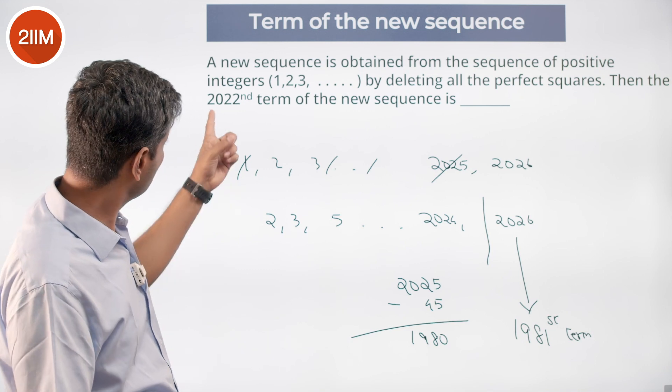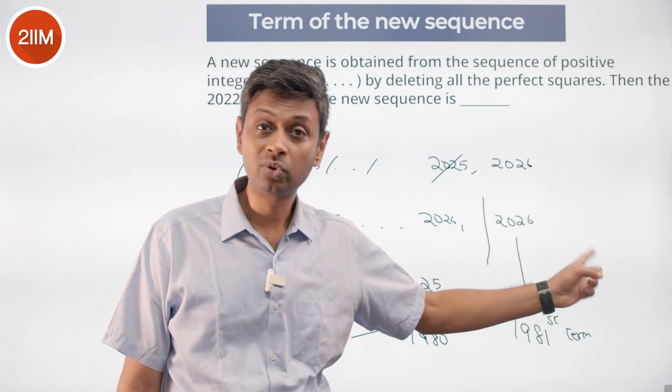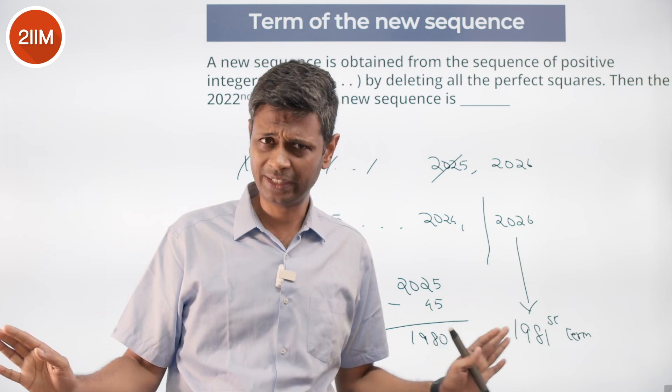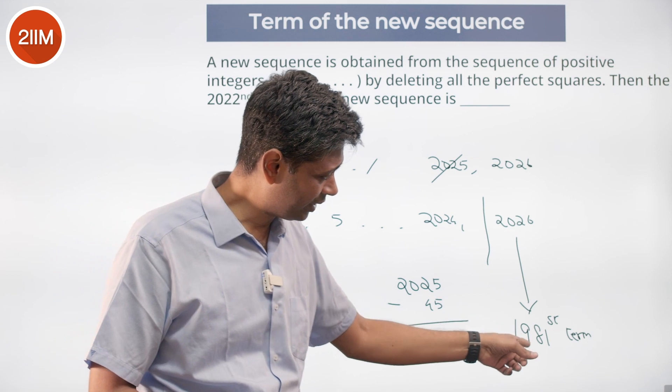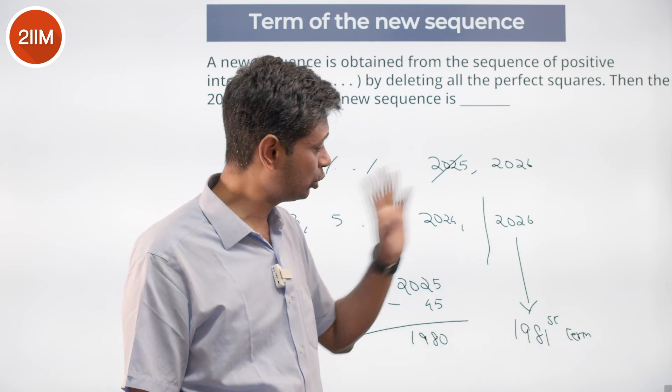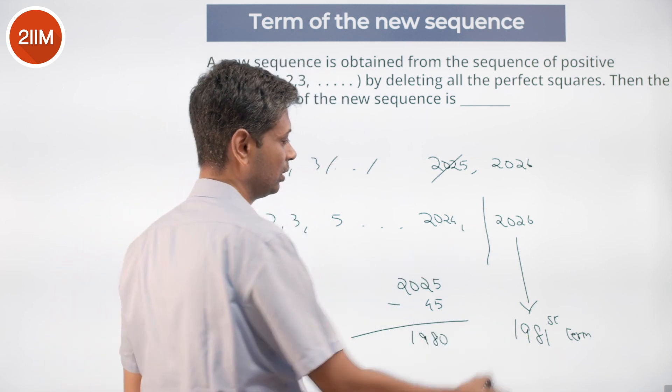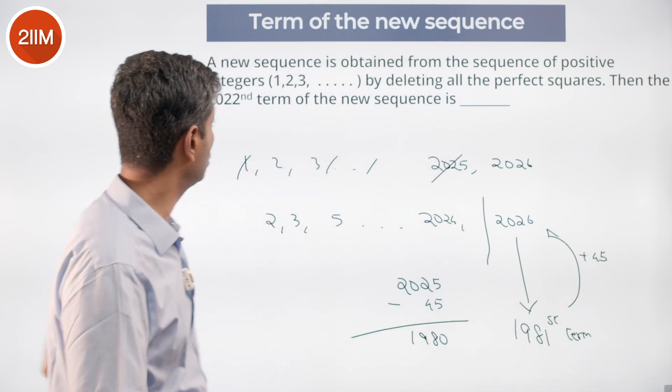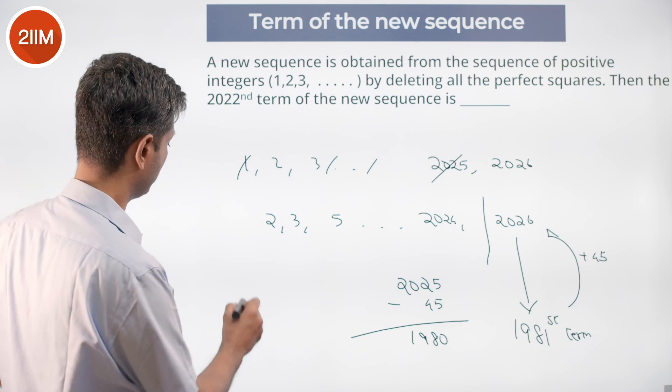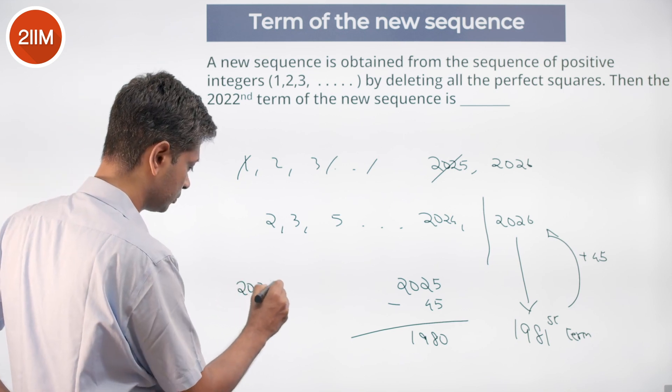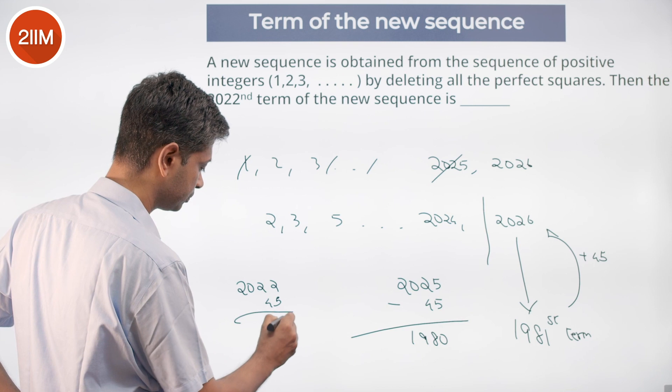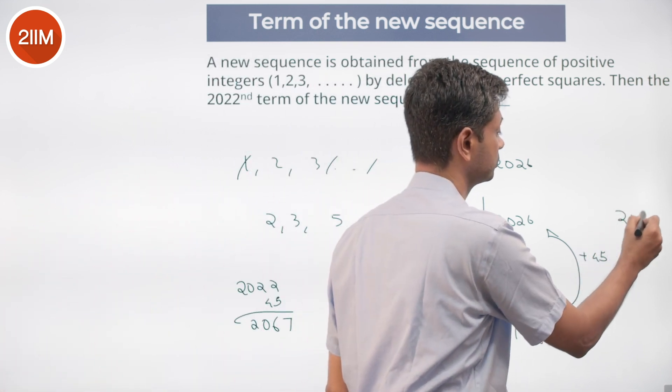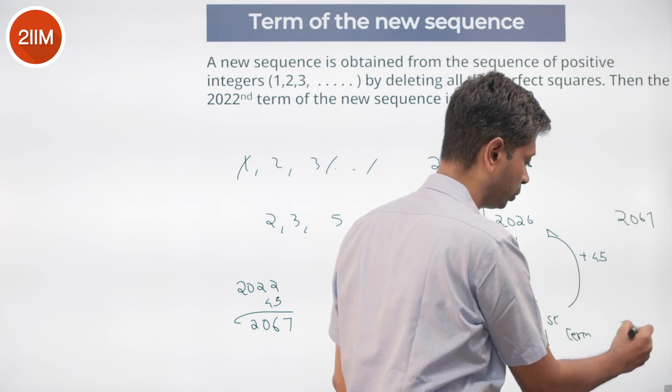So from here till 2022, I am going to get the next square. 46² is far away. After 45², I am not adding anything else. So the 1981st term is 2026. To this, I am adding 45. 2022 plus 45 is my answer: 2067. 2067 will be my 2022nd term.